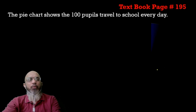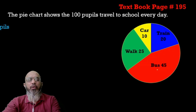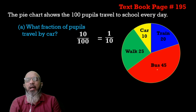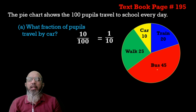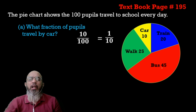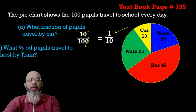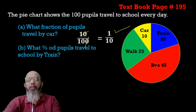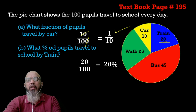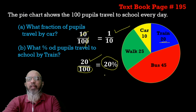The pie chart shows 100 percent overall. Part c: what fraction of people travel by car? Ten students travel by car out of 100 total, so the fraction is 10 over 100, which simplifies to 1 over 10. Part b: what percentage of people travel to school by train? That is 20, so 20 over 100 — since the denominator is 100, the percentage remains the same — 20 percent travel by train.